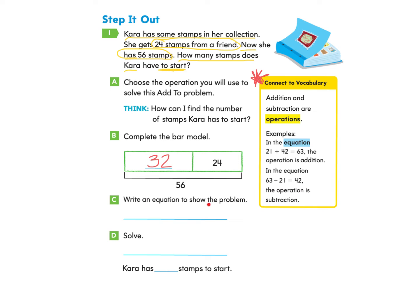Now we need to write an equation to show the problem. So before we had an unknown number plus 24 that we knew was going to make the total of 56. And then when we solved this equation, we found that 32 plus 24 makes 56. So we have now solved the question, how many stamps does Kara have to start? And we can answer that Kara has 32 stamps to start. Nice work.